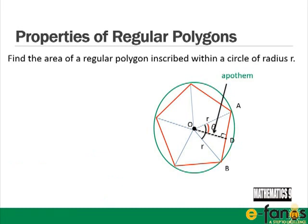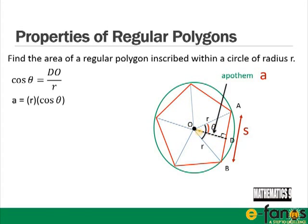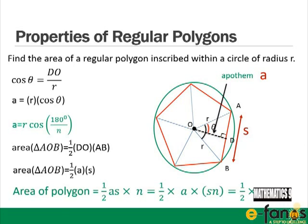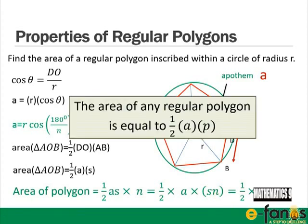To find the area: cos(θ) = apothem A / r, so A = r cos(180/n). The area of one triangle is ½ × A × s, and the total polygon area is ½ × A × n × s = ½ × A × P, where P is the perimeter. So the area of any regular polygon equals ½ × A × P, where A is the apothem and P is the perimeter.